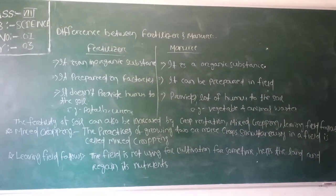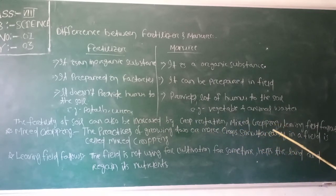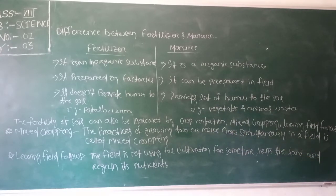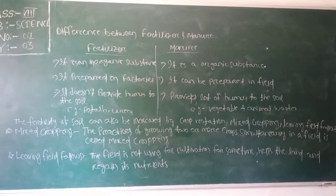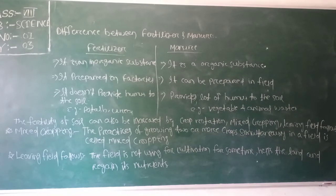What is mixed cropping? Mixed cropping means the practice of growing two or more crops simultaneously in a field. The crops are carefully chosen so that the products and waste material of one crop are beneficial for the growth of other crops. This is known as mixed cropping.